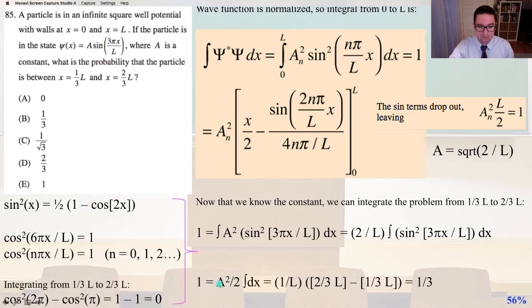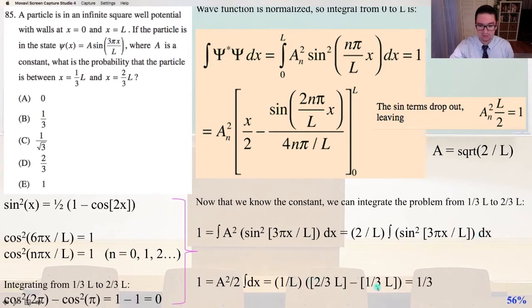So 1 equals A squared over 2 times the integral of dx — since the trig term reduces to 1, it's just 1 times dx — and that equals 1 over l times (2/3 l minus 1/3 l). So 1 over l times 1/3 l simply equals 1/3. And that is answer B.